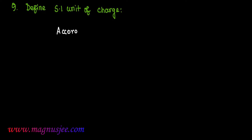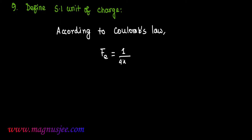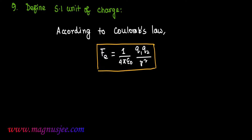We can derive the definition of the SI unit of charge using Coulomb's law. According to Coulomb's law, we can write the electrostatic force Fe = (1 / 4πε₀) × (Q1 × Q2) / R², and that is equation 1.